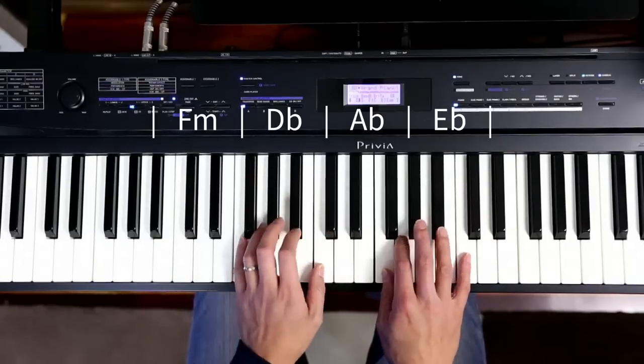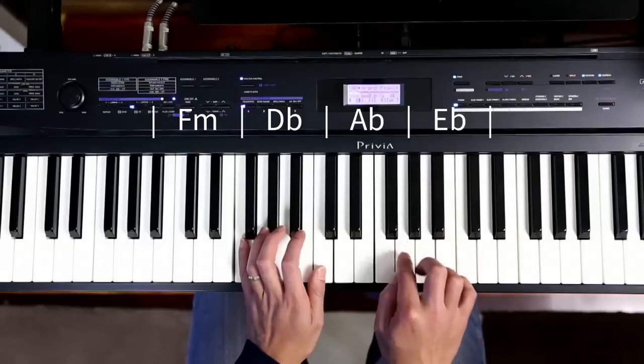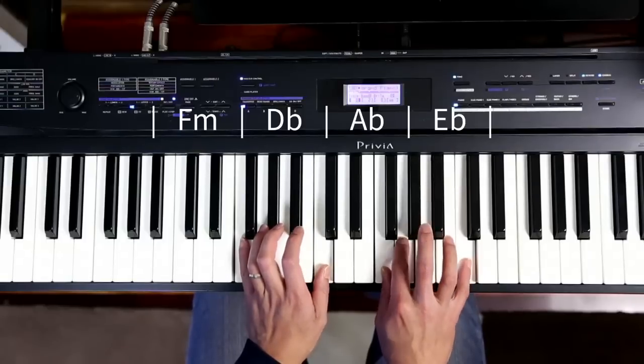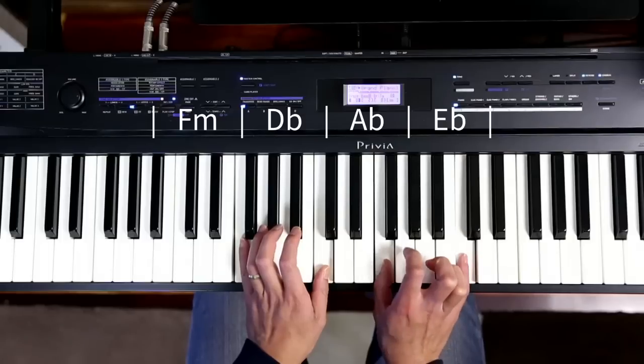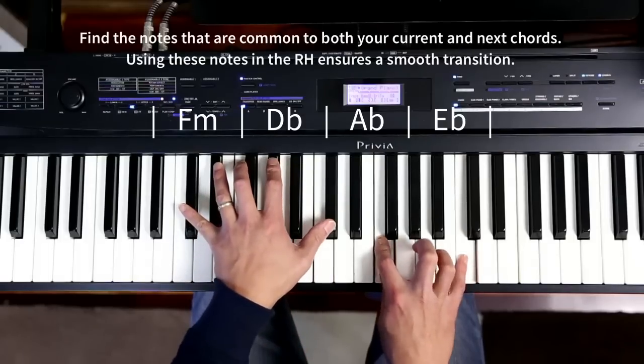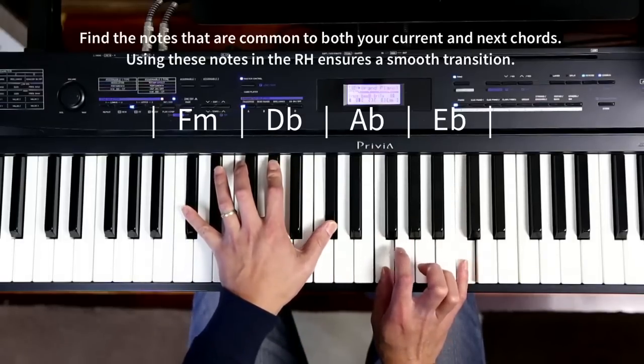But why did I choose that? How did I choose that? Well, I started off with an F minor with a two in it. I'm trying to keep the sound smooth and consistent, so I'm trying to retain the F and the C and keep them flowing into my next chord. Keeps it nice and smooth.